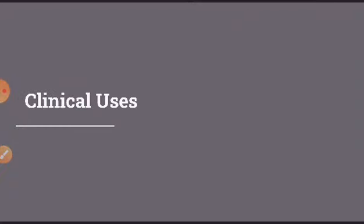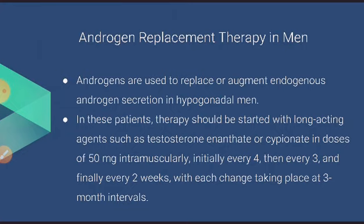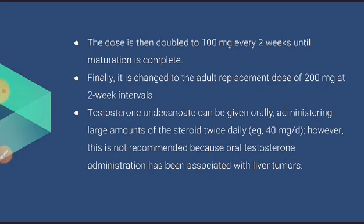For androgen replacement therapy, treatment should be started with long-acting agents such as testosterone enanthate or cypionate at 50 mg intramuscularly, initially every 4 weeks, then every 3 weeks, then every 2 weeks — with each change at 3-month intervals. The dose is then doubled to 100 mg every 2 weeks until maturation is complete, and finally changed to the adult replacement dose of 200 mg every 2 weeks.